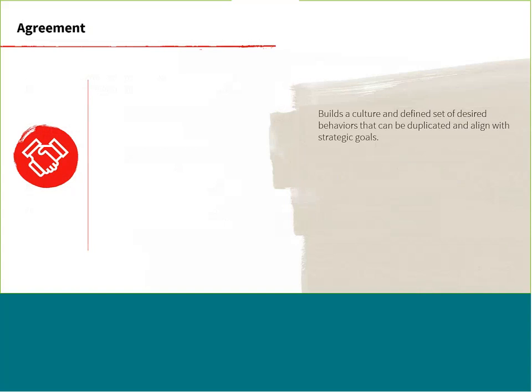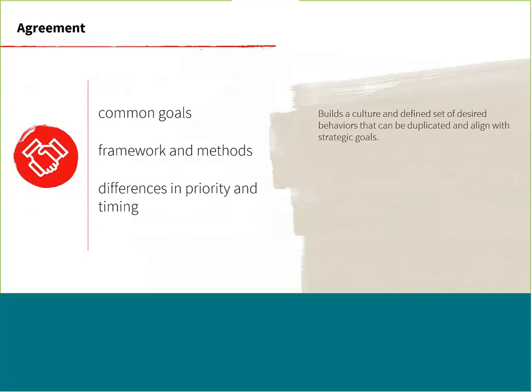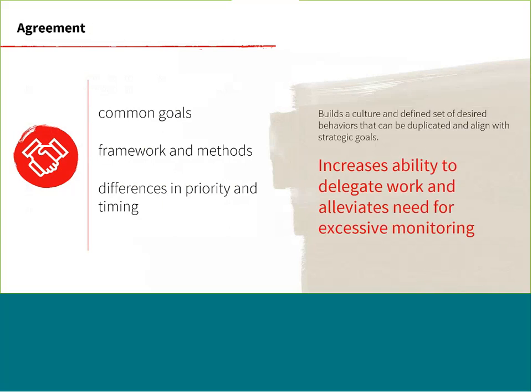The first key factor is agreement. A major component of any successful data governance program is building a culture that will facilitate the desired behaviors you want people to do naturally. By agreeing on common goals, putting in a framework and methods that can be duplicated from one area of the enterprise to another, and aligning with strategic goals, you are building that desired culture and trust. Having that trust allows you to increase the ability to delegate more and alleviate the need for excessive monitoring.